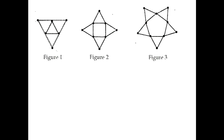Looking at the first figure, there is a triangle in the middle and from each side of that triangle another triangle is drawn. The number of sticks equals the number of sides of the triangles outside the middle triangle. There are 3 outer triangles, so the total number of sticks needed is 3 × 3 = 9.